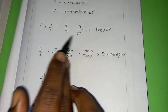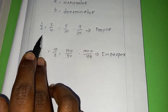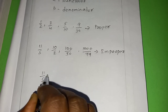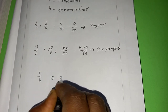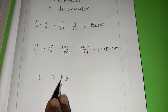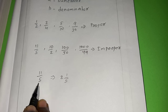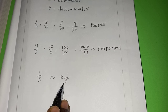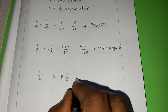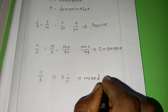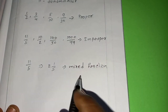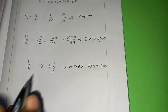A proper fraction can only be represented in the form A by B. But in the case of an improper fraction, we can also represent the number differently. For example, 11 by 5 can also be represented as 2 and 1 by 5. So 2, 1 by 5 is a combination of a whole number and a fraction. We call it a mixed fraction. A mixed fraction is a combination of a whole number and a fraction number.